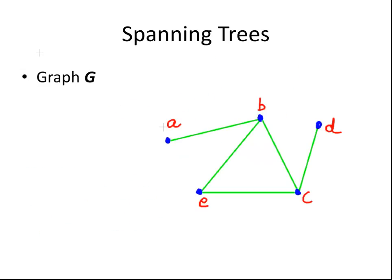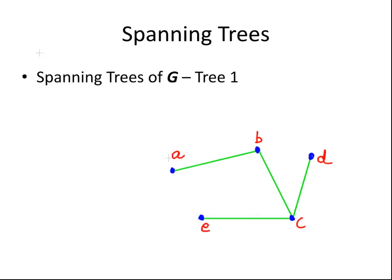That's graph G again. In the first instance, we remove one edge to get spanning tree one. Let's make a note of the degree sequence: 1, 2, 3, 1, and 1. That's the degree sequence of tree one.